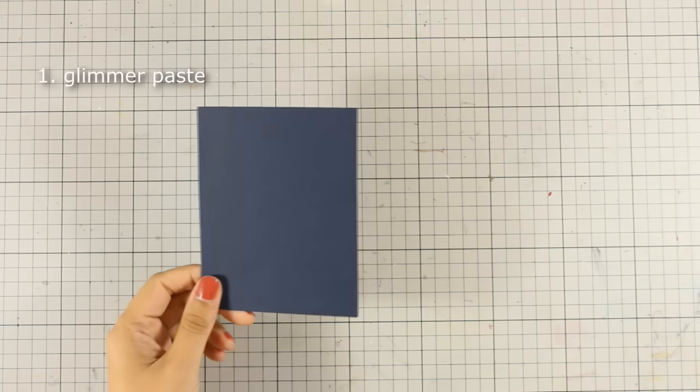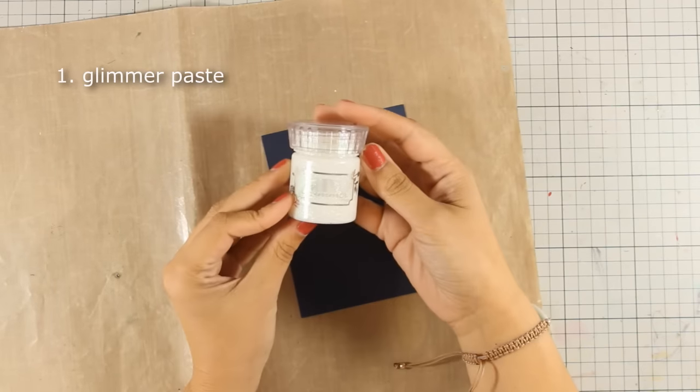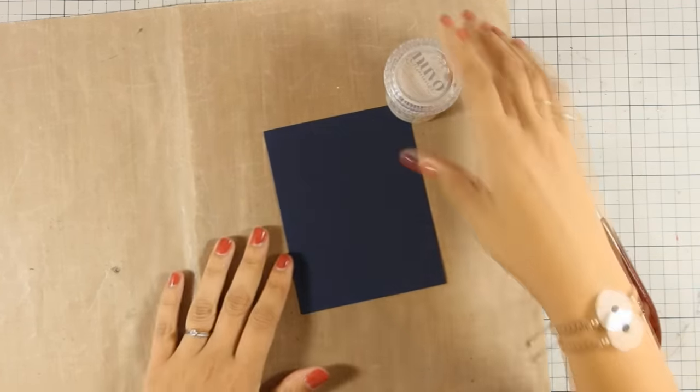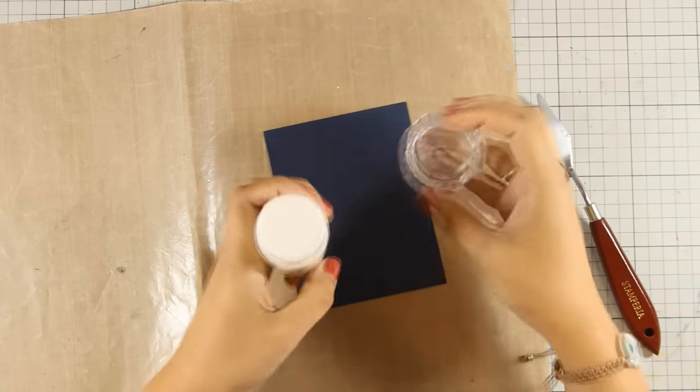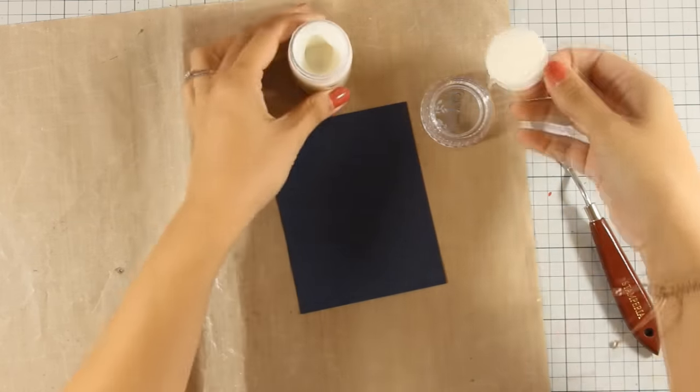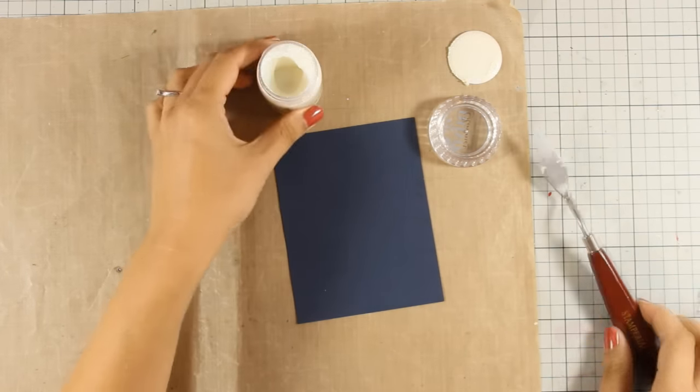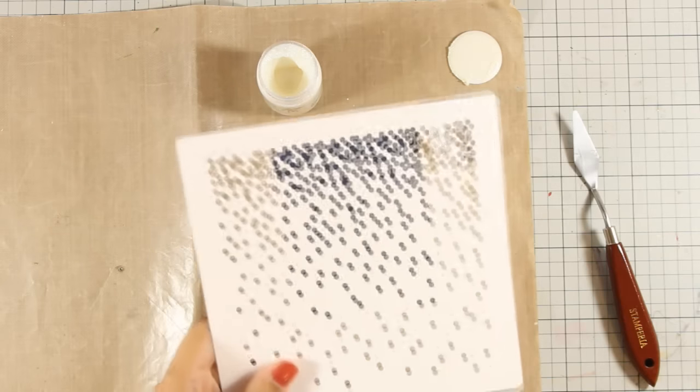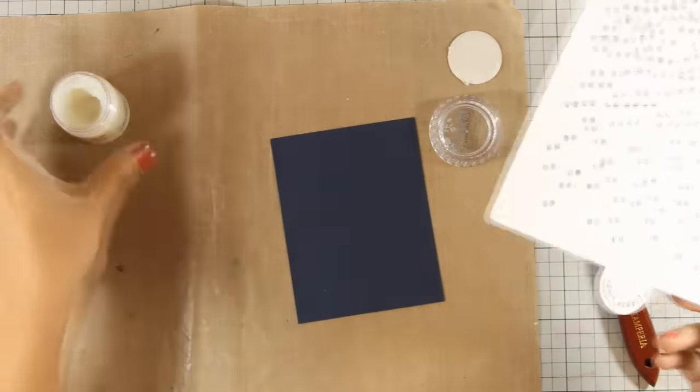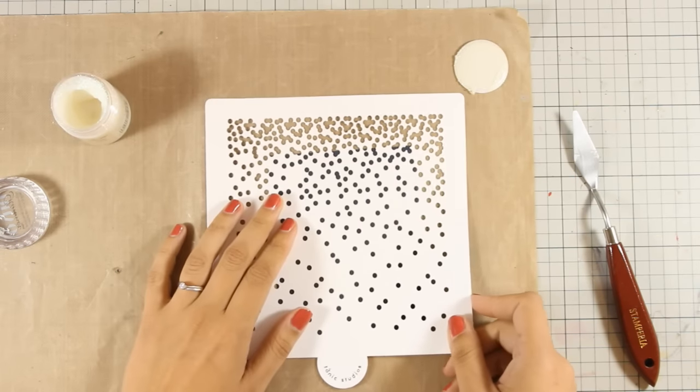I'm going to start by showing you how you can use Glimmer paste. I'm going to place this piece of cardstock on my craft mat and the Glimmer paste that I am using is called Moonstone, but you can find 12 different colors. I am going to use a stencil and apply my Glimmer paste over that stencil. I'm using this 6x6 stencil by Tonic Studios called Beautiful Bokeh, and I'm going to use it to create my background as if it's falling snow.